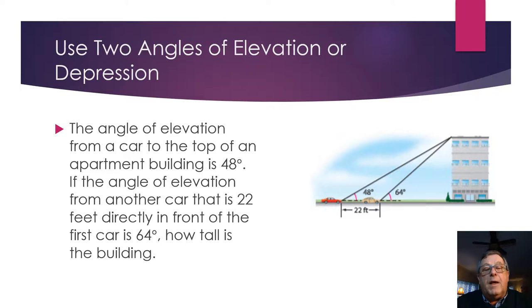The angle of elevation from a car to the top of an apartment building is 48 degrees. So we're talking about this first car right here. If the angle of elevation from another car that is 22 feet in front of the first car is 64 degrees, so here's our car, here's our 22 feet, there's this second car right there. How tall is the building?